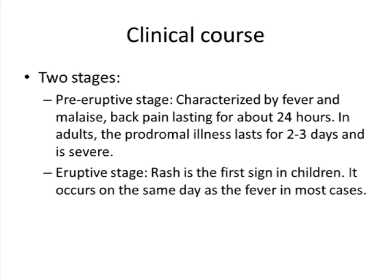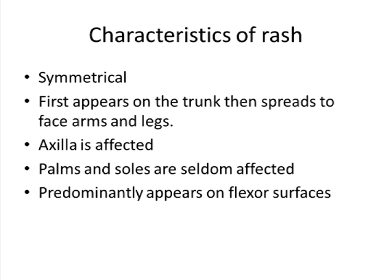The eruptive stage follows, meaning the appearance of the rash. In children, the rash often appears as the first sign, coming up immediately after fever onset. The rash of chickenpox is symmetrical, occurring on both sides of the body. It first appears on the trunk and then spreads to the face, arms, and legs. The axilla is affected in most cases, however the palms and soles are seldom affected. The rash has a predilection for flexor surfaces over extensor surfaces.